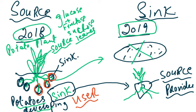Phloem has sucrose in solution, amino acids in solution, ions, and plant growth regulators. All of those are transported in the phloem.